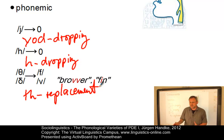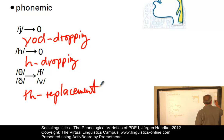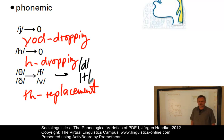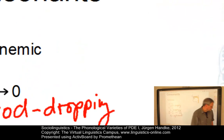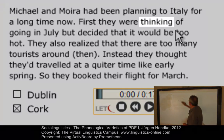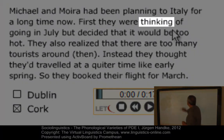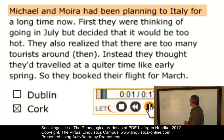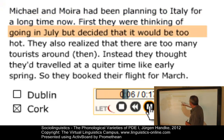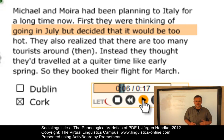Or the dental fricative may be replaced by D or T, for example in Irish English. Let's listen to a speaker from Cork in Ireland — pay attention to the word 'thinking', which is a good example of TH replacement in Irish English: 'Michael and Mara have been planning to go to Italy for a long time now. First they were thinking of going in July.' And I think that's convincing enough.